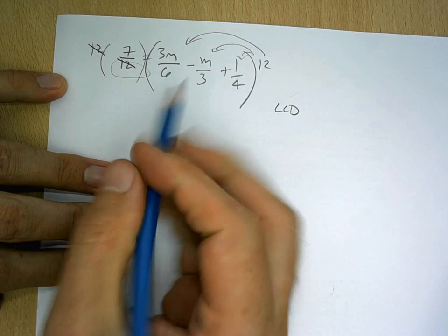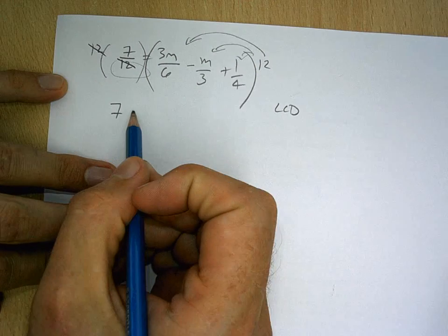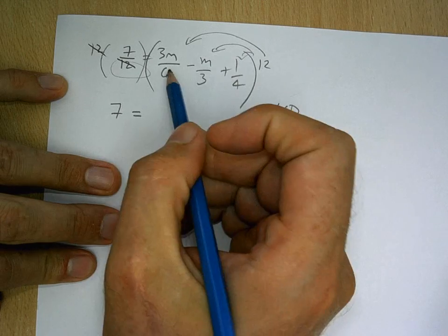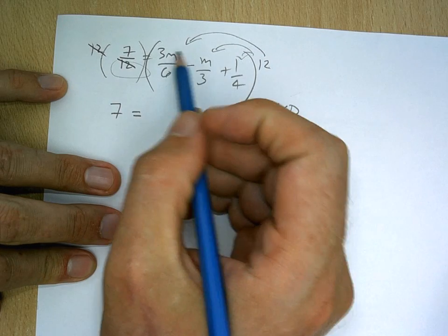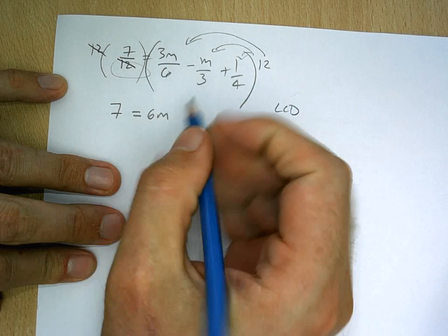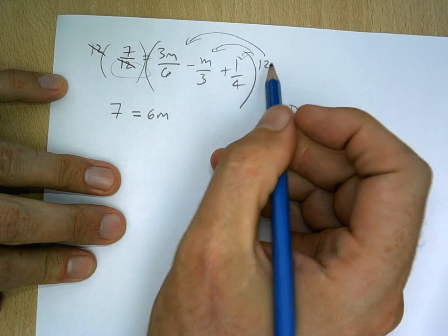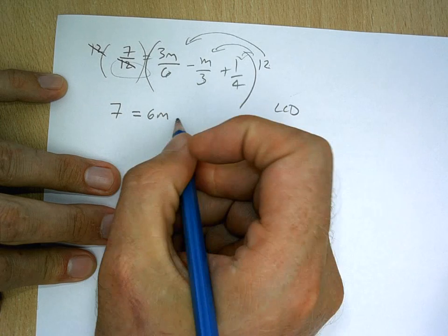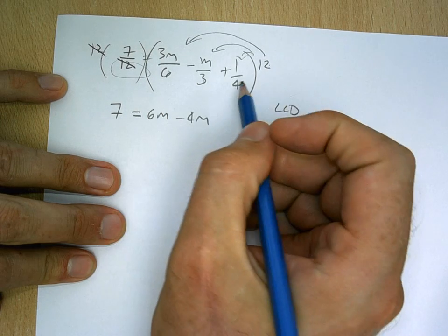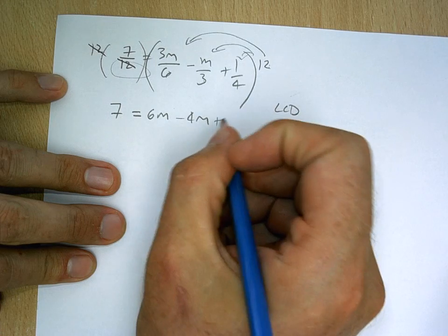Now it's easy on the left side. The 12s actually cancel, leaving us with 7 over here on the left side. And then 6 goes into 12 two times, and 3 times 2 is going to be 6m. 3 goes into 12 four times, so it's going to be minus 4m. And 4 goes into 12 three times, so I'm going to have plus 3.